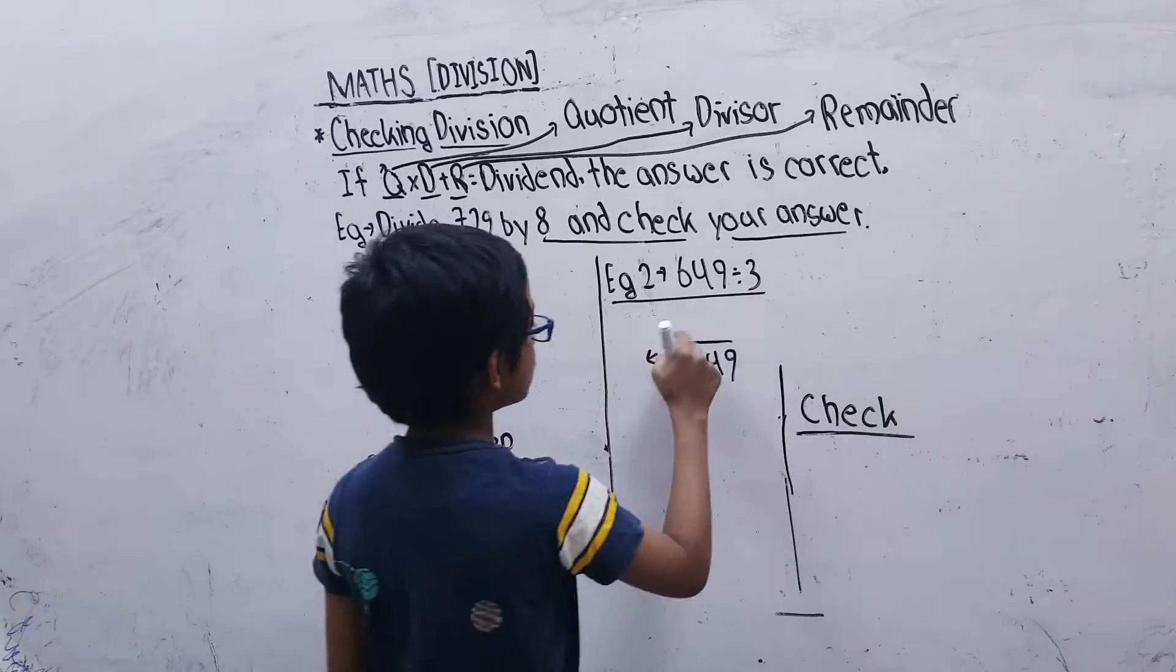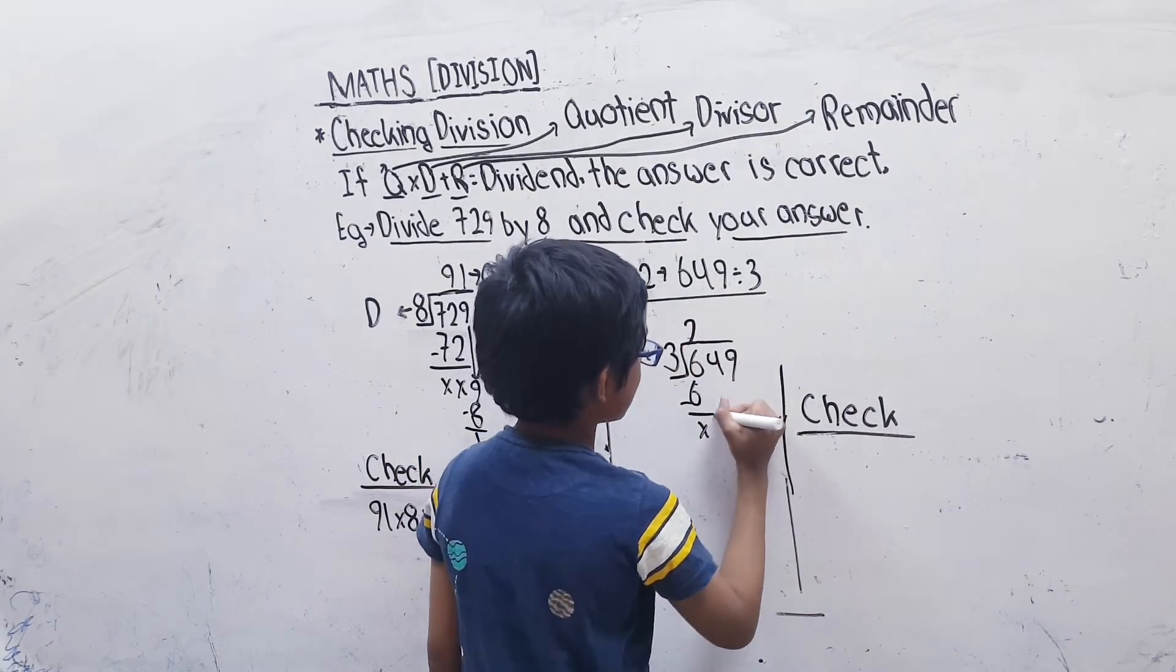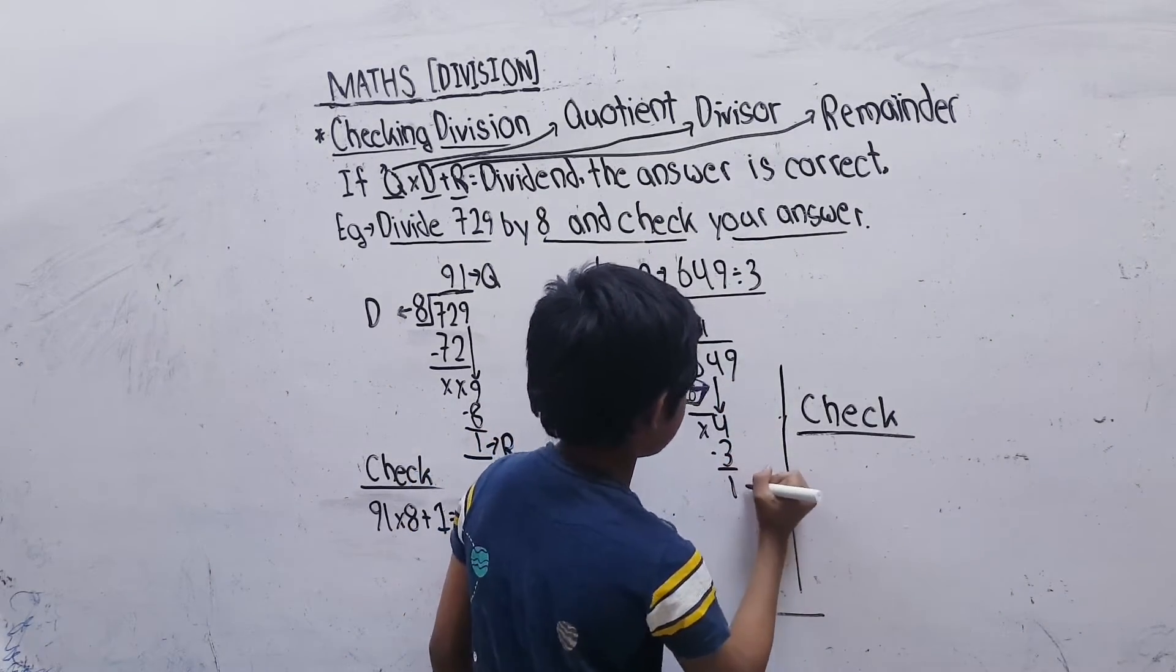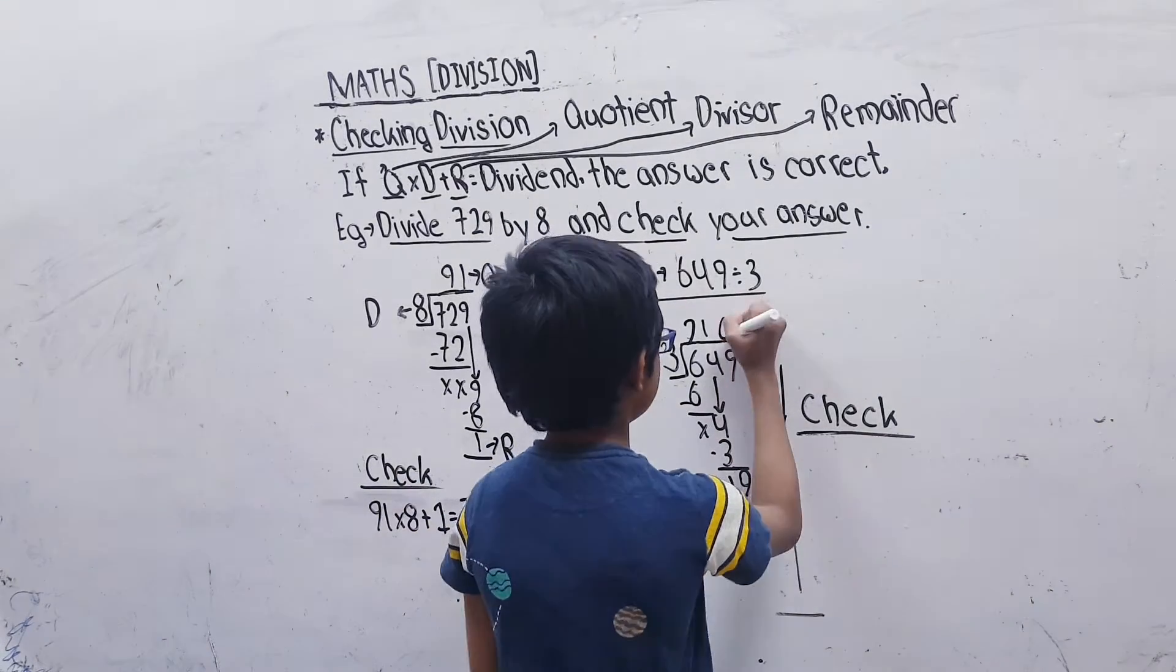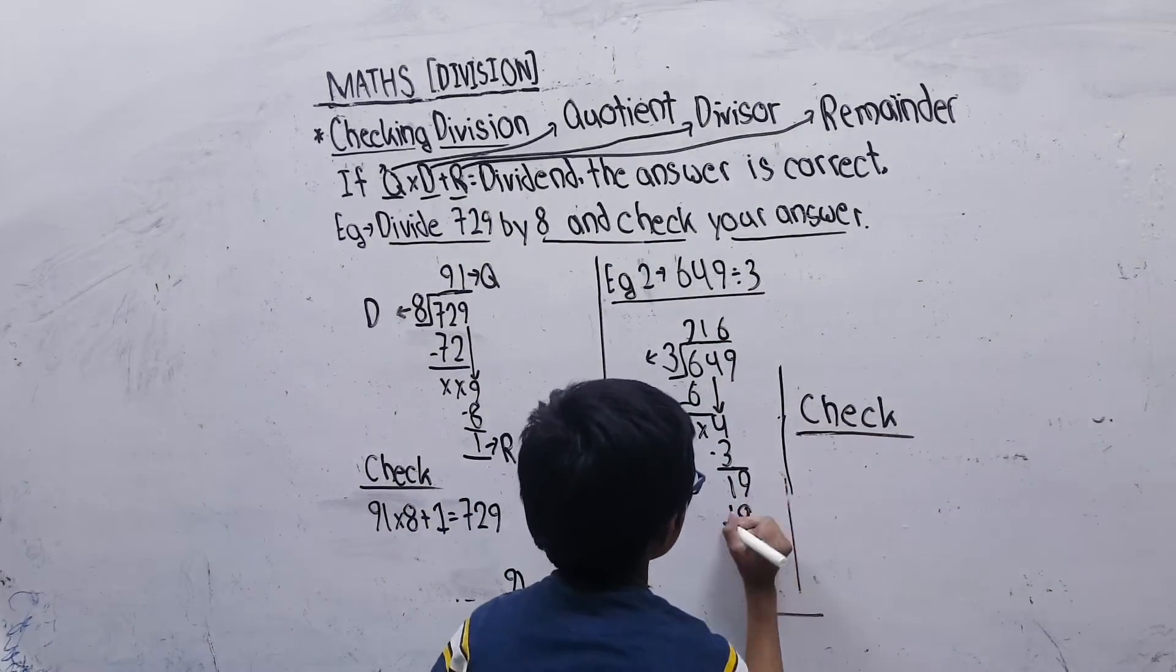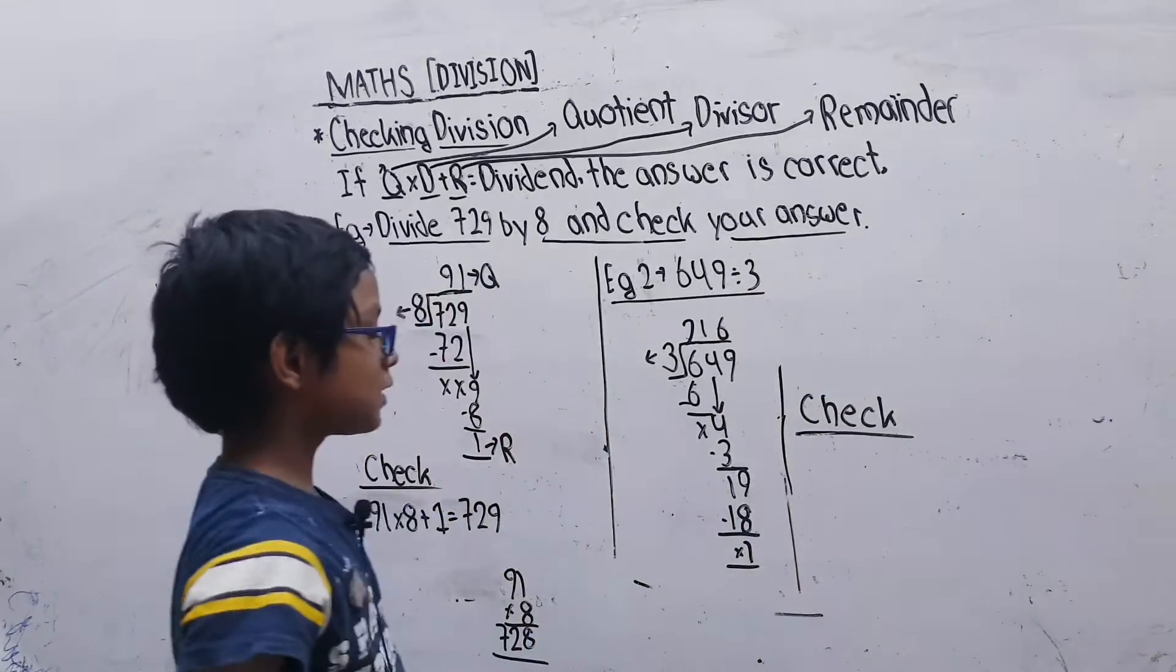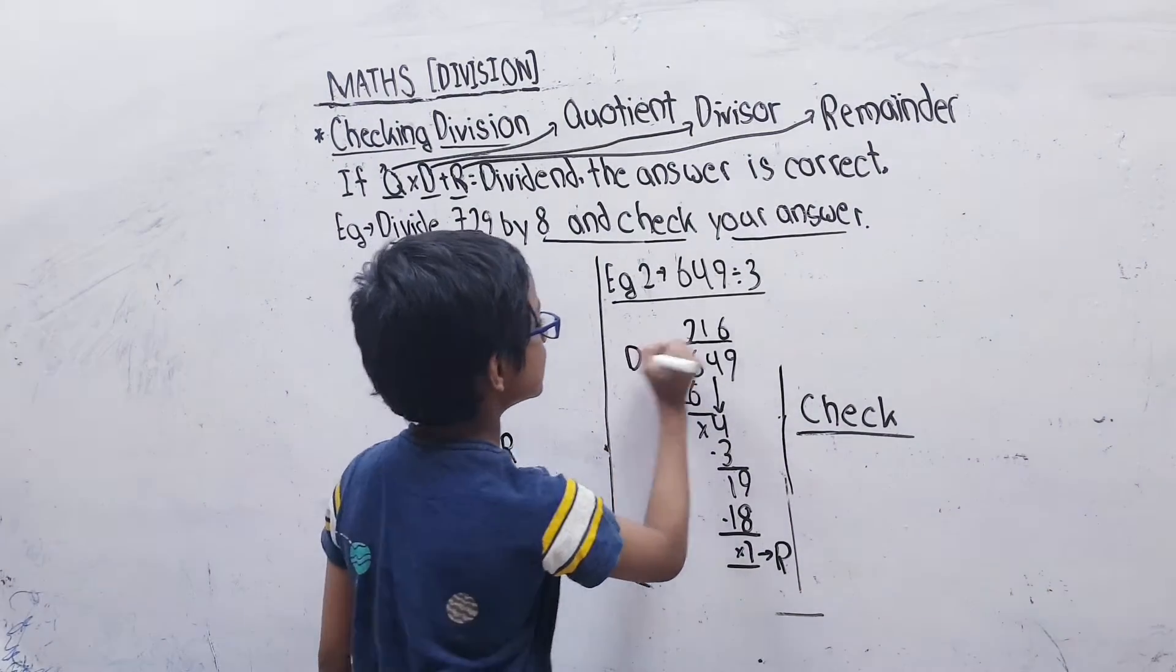3×2=6. Then 4 will come. 3×1=3, 4 minus 3 equals 1. Then 19 will come, and here will be 6. 19 minus 18 equals 1. So the remainder is 1, this is the divisor and quotient.